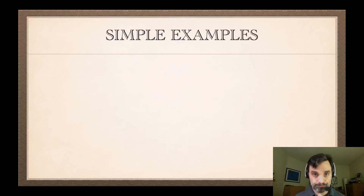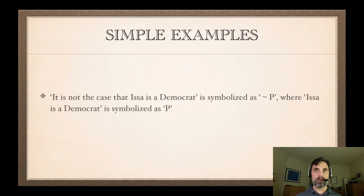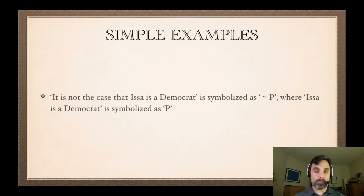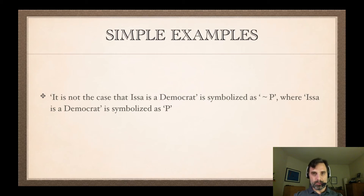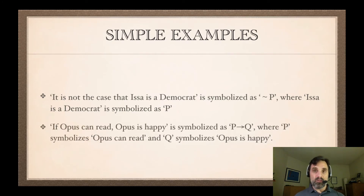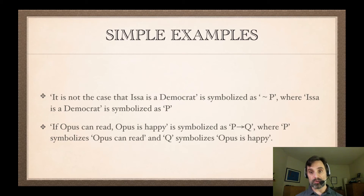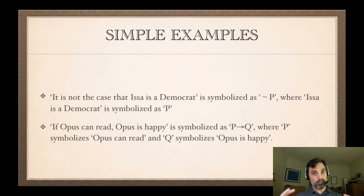Let's look at some simple examples. We have 'It is not the case that Issa is a Democrat.' We can symbolize that as 'not P,' where P symbolizes 'Issa is a Democrat.' So we translate 'Issa is a Democrat' into P and put a negation in front. Next: 'If Opus can read, then Opus is happy.' We can symbolize that as P arrow Q, where P symbolizes 'Opus can read' and Q symbolizes 'Opus is happy.' We use our scheme of abbreviation — pairing each English atomic sentence with a sentence letter — to produce the symbolizations of the complex sentences.